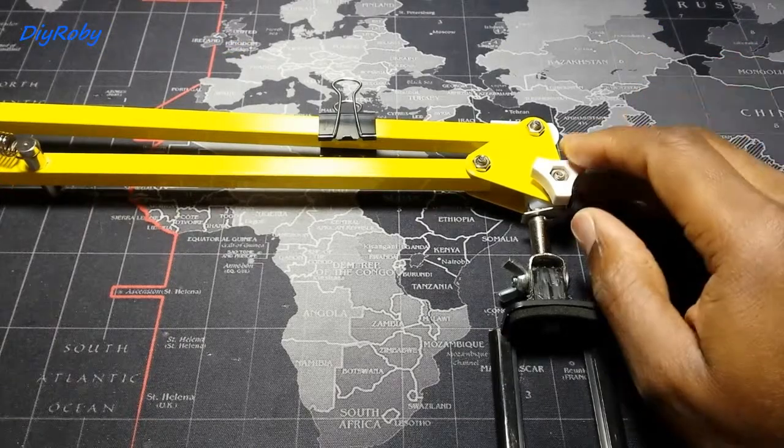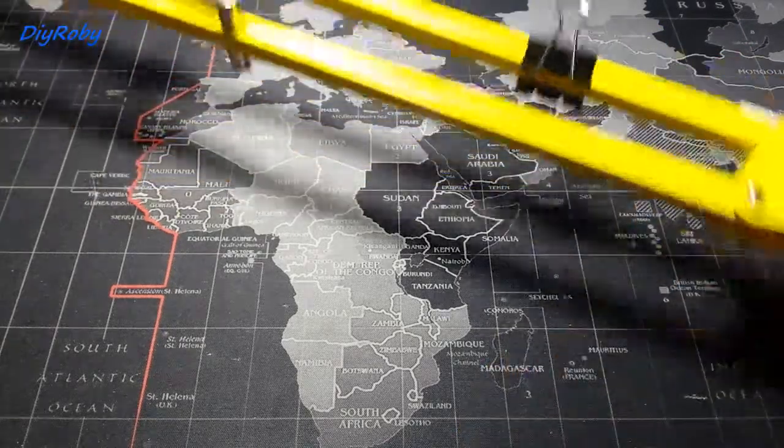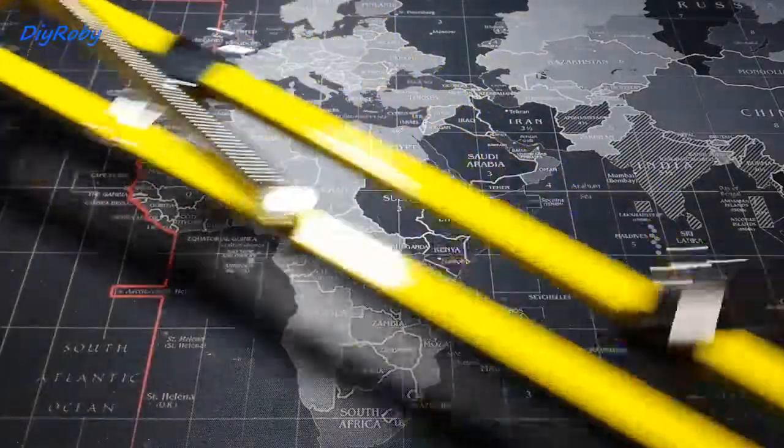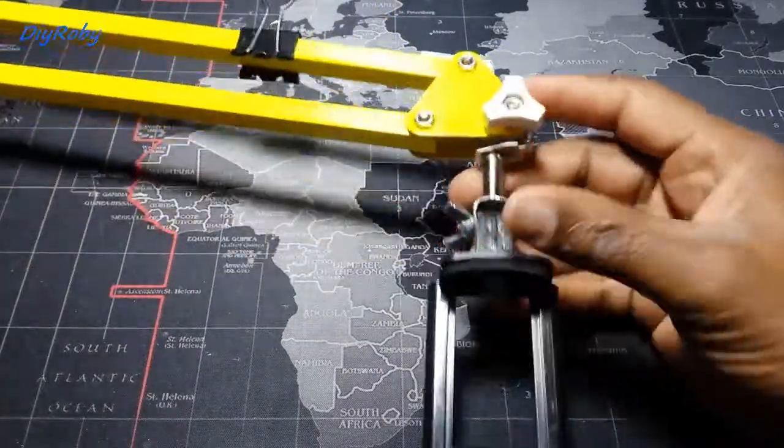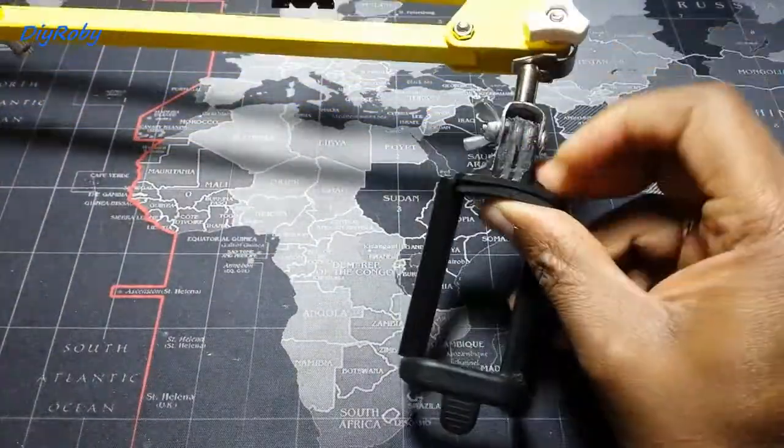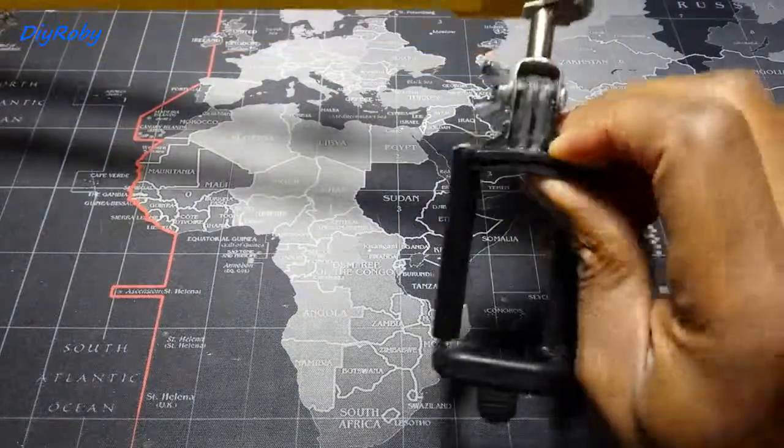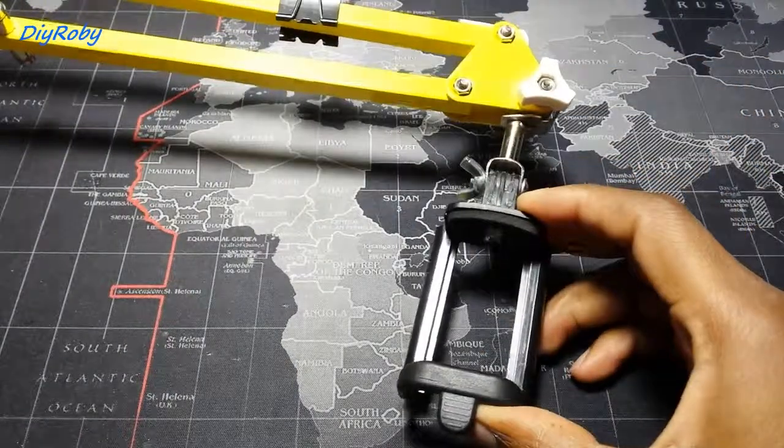Hey guys, in this video I'm going to show you how I converted my IKEA Tertial lamp articulated arm into a support for my cell phone so I am able to capture videos from my desk.